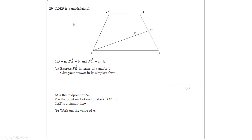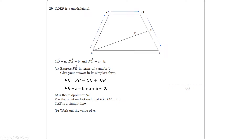In our first example, they give us a quadrilateral and these three vectors, which I'll label on the diagram. They ask us to express F to E in terms of A and/or B. Even though they haven't given us the vector F to E, we can express it by going from F to C, to C to D, to D to E. We know the values of all these vectors in terms of A and B, so substituting in gives F to E = 2A. The answer to part A is just 2A.